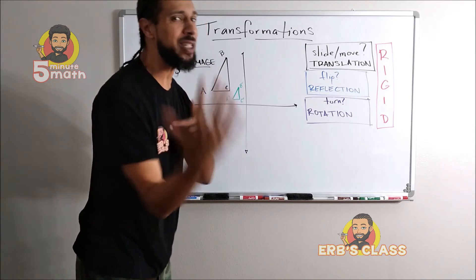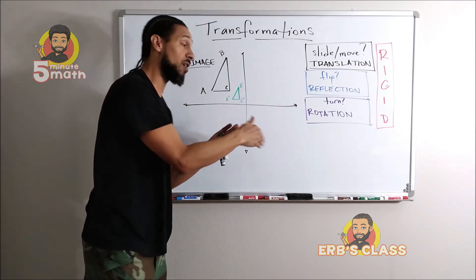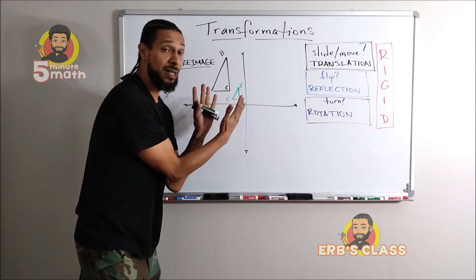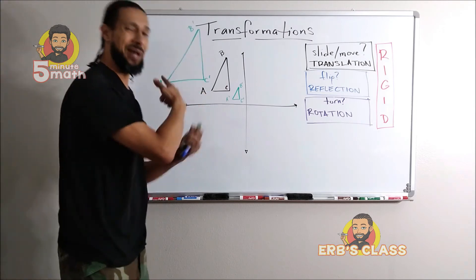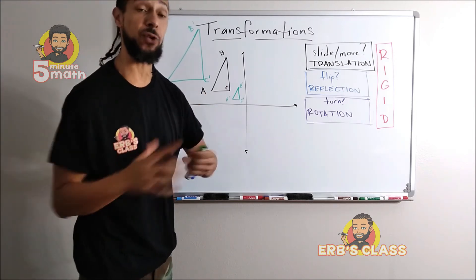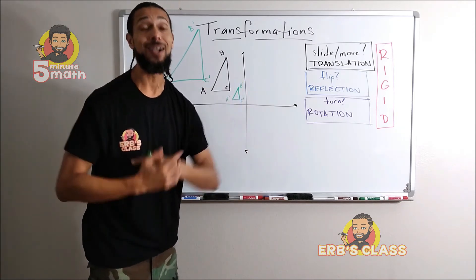So not only can we change where it is or how it's flipped or how it's rotated, we can also change the size too. And it doesn't have to always get smaller, it can also get bigger. But the official and technical name for changing the size, whether that means getting bigger or getting smaller, is called dilation.